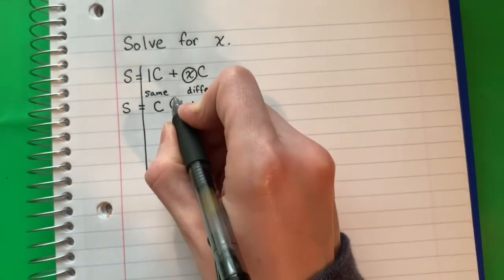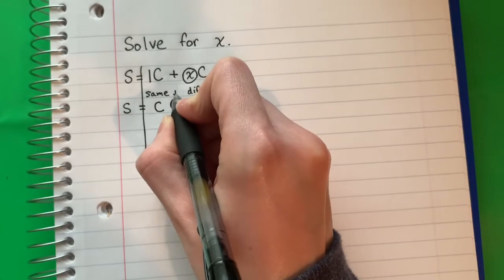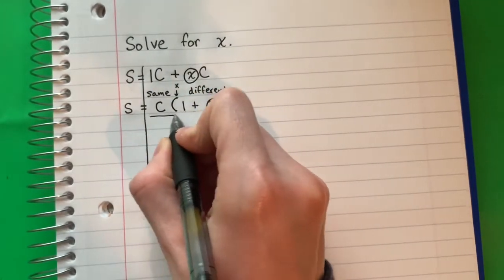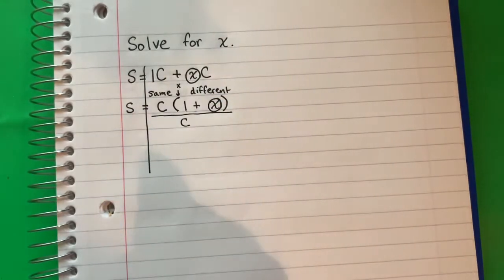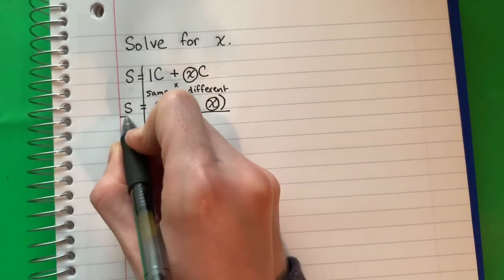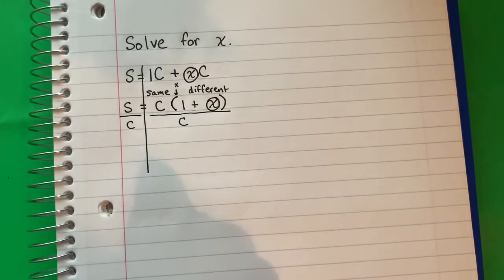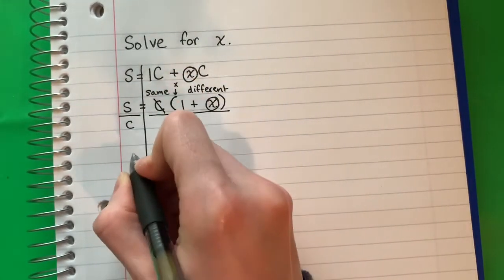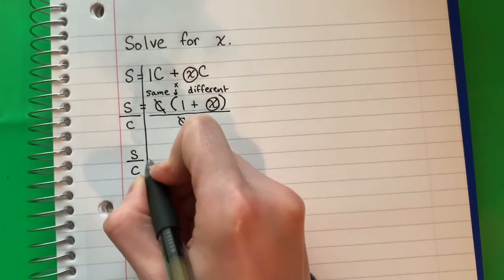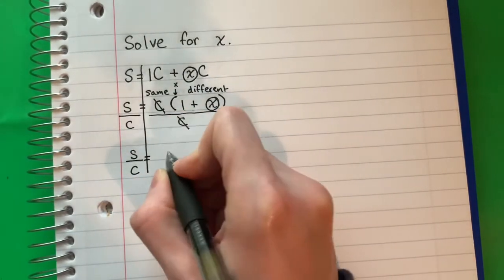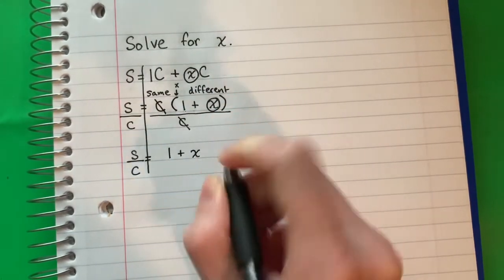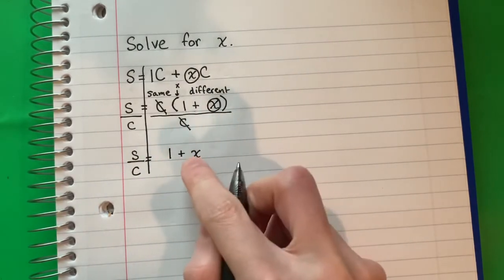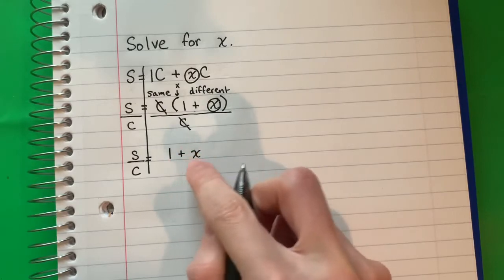Okay, so this is parentheses. Remember, parentheses is multiply. The opposite is divide. So I'm going to divide and move the c. And I'm going to copy, divide by c. So I'm going to cancel the c's. Those are one. And I'm going to copy s divided by c equals, and I'm going to copy that one plus x. No parentheses because they are together alone. No paréntesis porque están juntos solos.